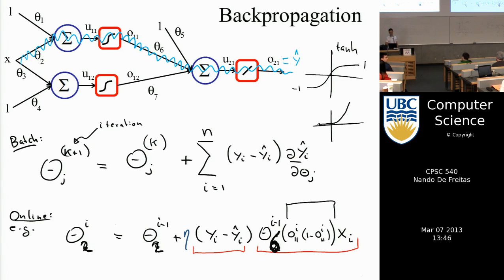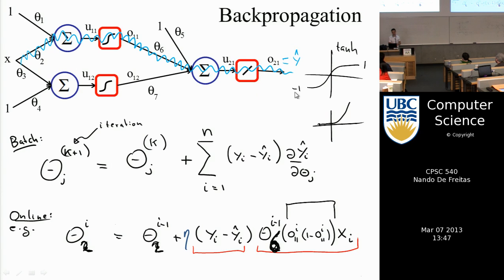One important issue with deep networks: because the sigmoid derivative is o * (1 - o), a number between 0 and 1, multiplying many such terms across many layers causes the gradient to vanish rapidly — this is the vanishing gradient problem, making it very hard to train deep networks. Solutions include using the hyperbolic tangent (tanh, ranging from -1 to 1) or rectified linear units (ReLUs), which behave better. More strategies to address vanishing gradients will be discussed next class.